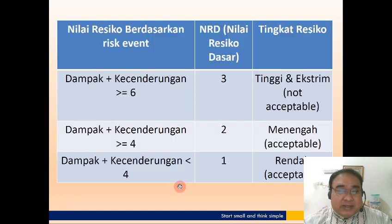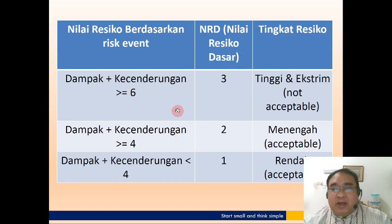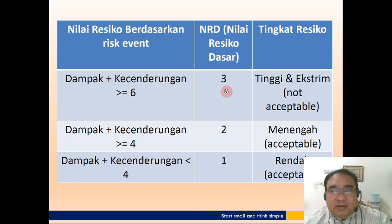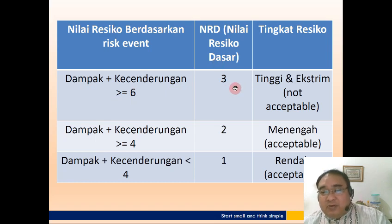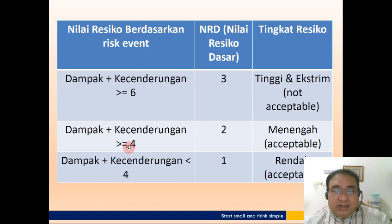Ada yang disebut nilai resiko dasar (NRD). Kalau misalnya dampak dan kecenderungan lebih dari 6, nilai resiko dasarnya 3, artinya warna merah. Tapi kalau misalnya konsekuensi dan probability-nya 4 sampai dengan 6, itu 2 menengah, dan 1 sama dengan 4 itu adalah rendah.